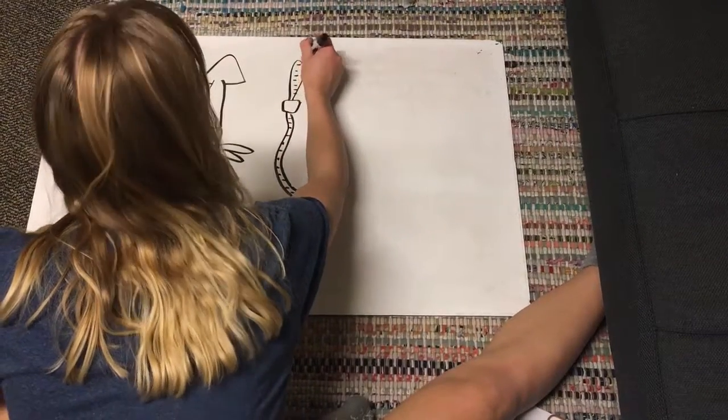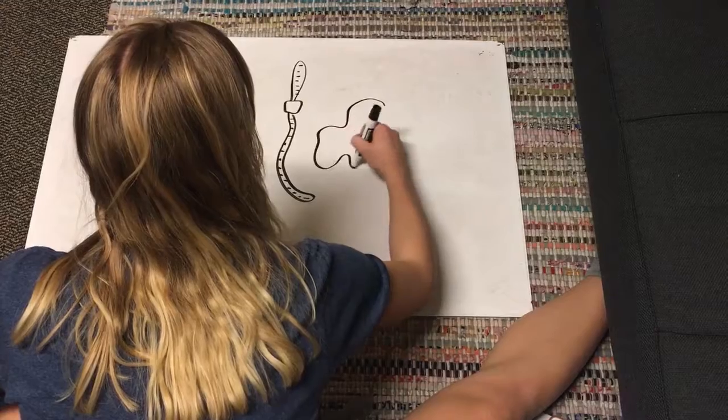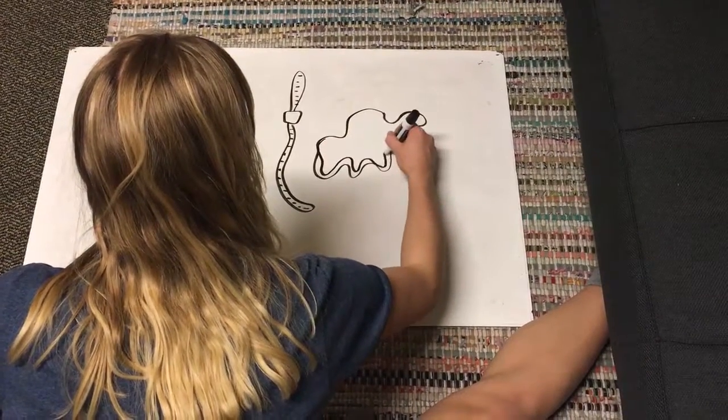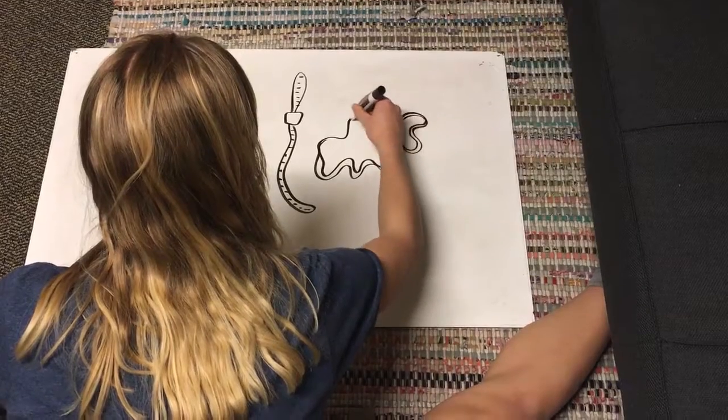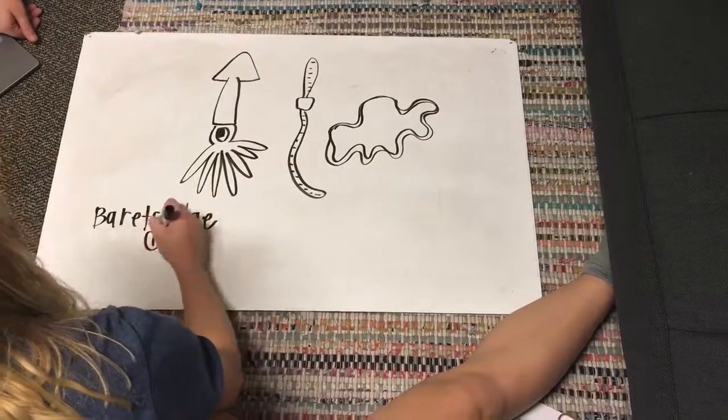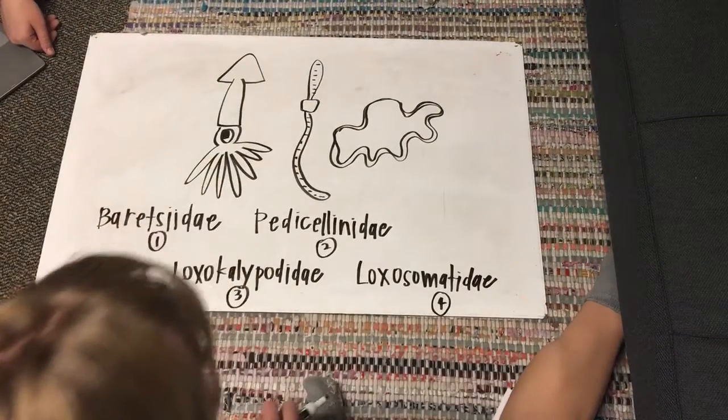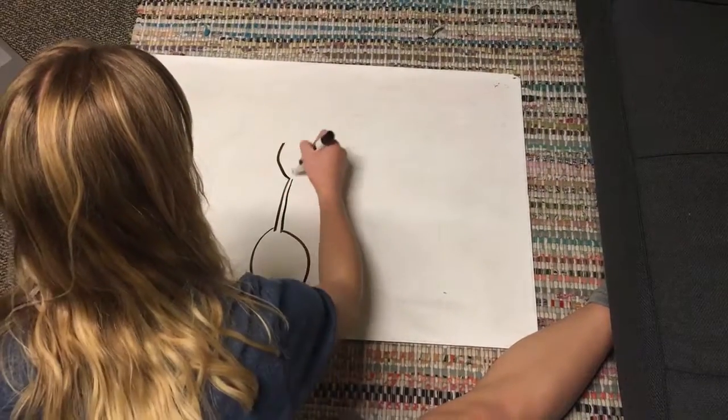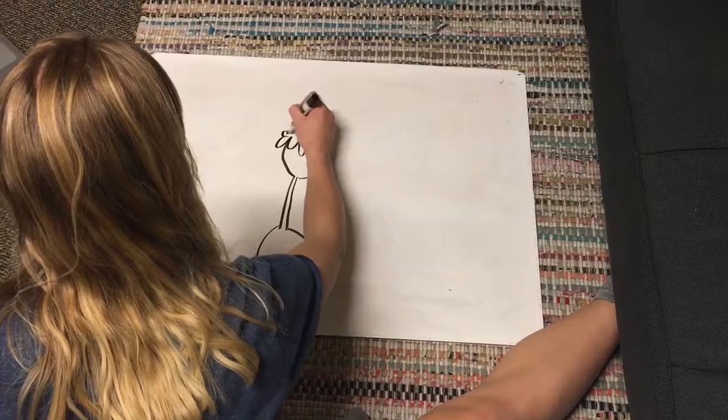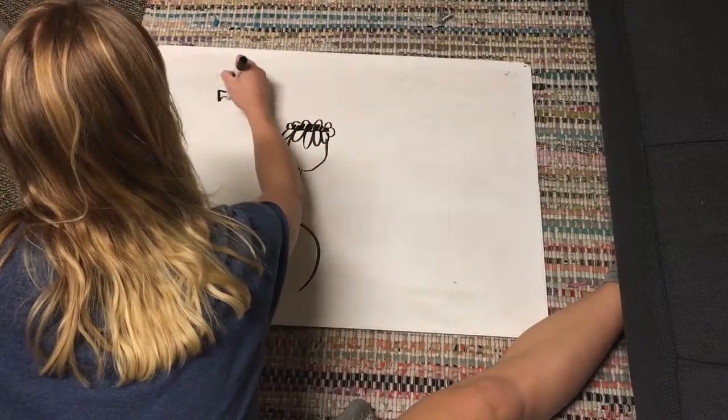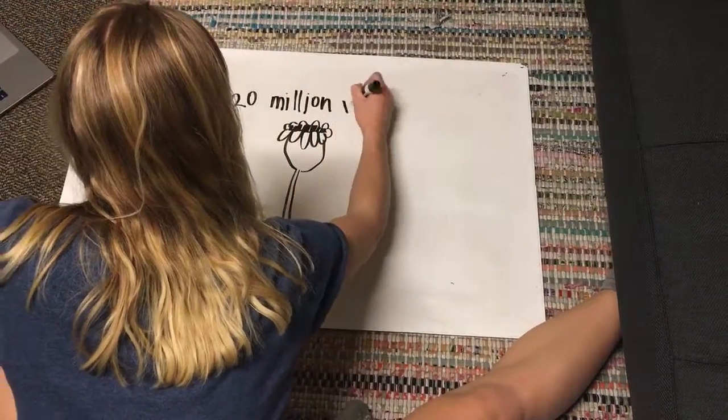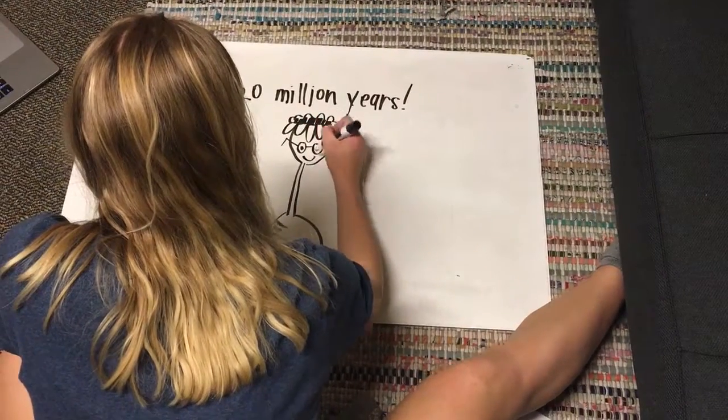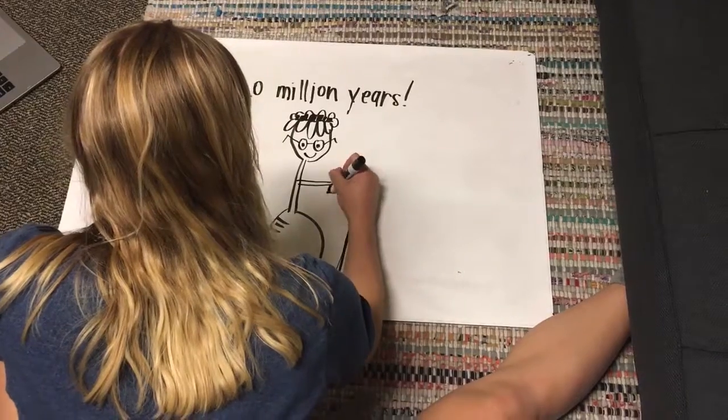The Endoprocta phylum contains about 180 recognized species, grouped into four families: Barentsiidae, Pedicellinidae, Loxocalypodidae, and Loxosomatidae. Because endoprocts are small in size and possess a delicate body structure, fossils have been extremely rare. However, Endoprocta fossils can be dated back to approximately 520 million years ago, during the Cambrian period.